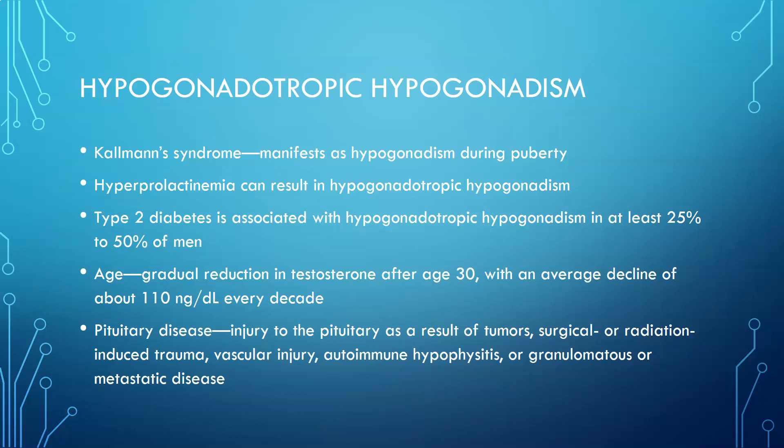Hypogonadotropic hypogonadism means you would not have enough of the gonadotropic hormones — GnRH — resulting in low LH and FSH, and then the gonads or testes won't be functioning adequately. Kallmann syndrome will manifest as hypogonadism during puberty. Hyperprolactinemia can also result in hypogonadotropic hypogonadism.